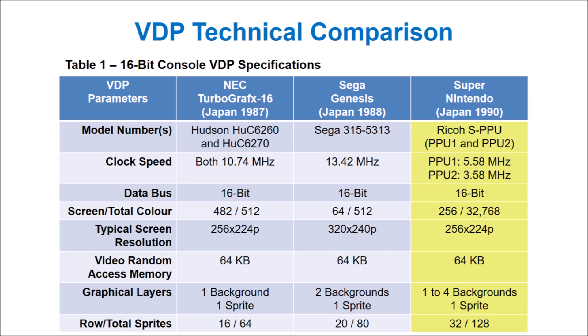The Super Nintendo has two video processors. PPU1 is the main video processor, and PPU2 provides additional graphical effects. The Super Nintendo has an impressive 15-bit color palette. It could also display up to four background layers, including the famous Mode 7, which enables the scaling and rotation of one background layer. The Super Nintendo also had the largest number of sprites on screen. However, it also has the slowest clock speed of the three systems, and we'll see if that factors into the graphical performance.